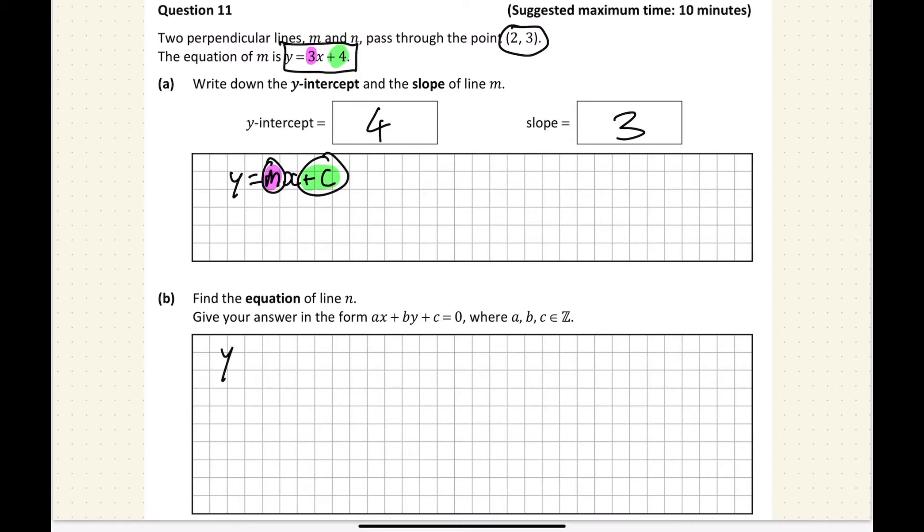Find the equation of the line. So the formula for the equation is y minus y1 equals m bracket x minus x1. And we have the point, which was given to us, (2, 3). So that's up here. And we need to find the slope.